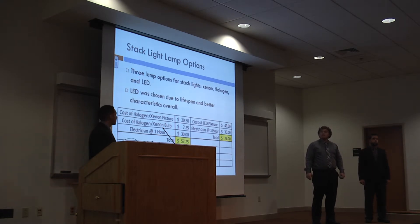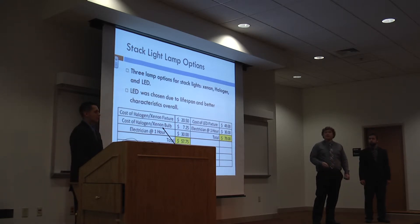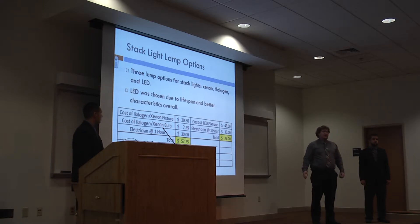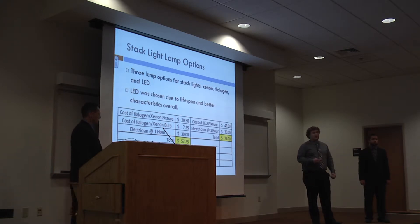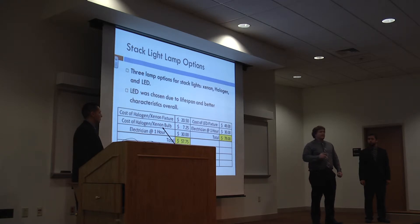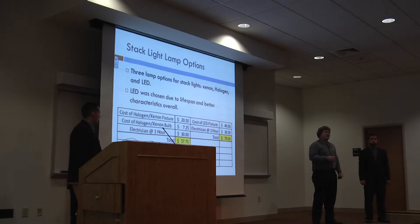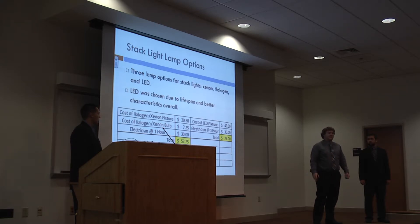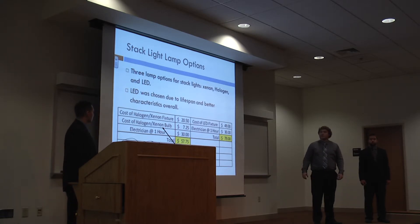For the stack light options, there were three main types: xenon bulb, halogen, and LED. The result we chose was the LED light. We did a cost analysis — if you had to replace a halogen or xenon bulb, which is rated at about 2,000 hours, versus the LED which should last 25,000 hours. If you just have to replace one bulb, there's your cost difference in choosing the LED over the two incandescents.